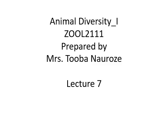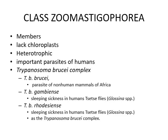Animal Diversity 1, Lecture 7. Class Mastigophora and its members lack chloroplasts, so they are heterotrophic — mostly they are parasites. For example, Trypanosoma brucei complex includes Trypanosoma brucei brucei, a parasite of non-human mammals of Africa; Trypanosoma brucei gambiense, a parasite in humans causing sleeping sickness through the tsetse fly; and Trypanosoma brucei rhodesiense, which also causes sleeping sickness in humans via the tsetse fly. These three are collectively called the Trypanosoma brucei complex.